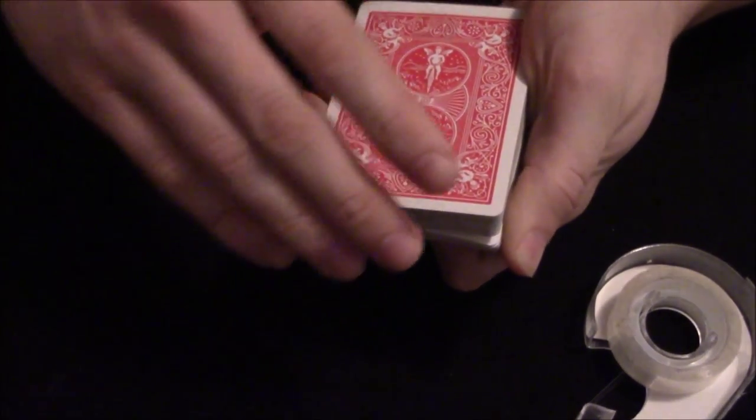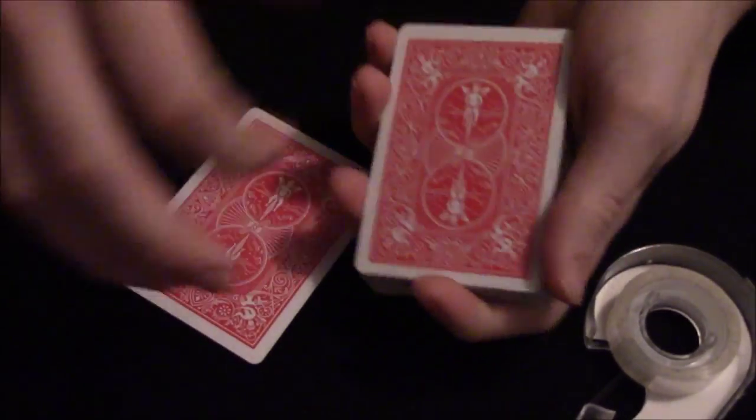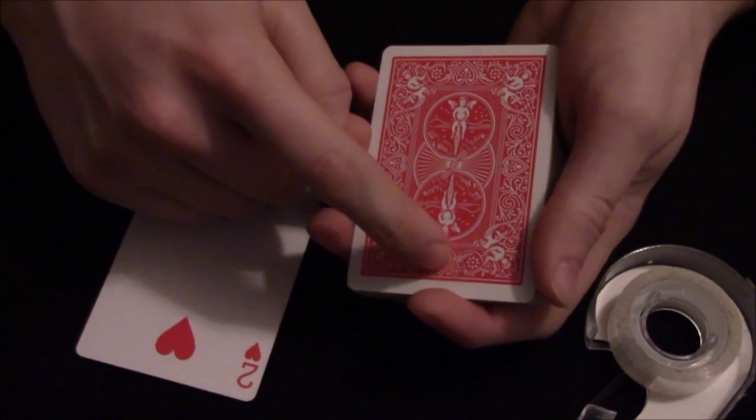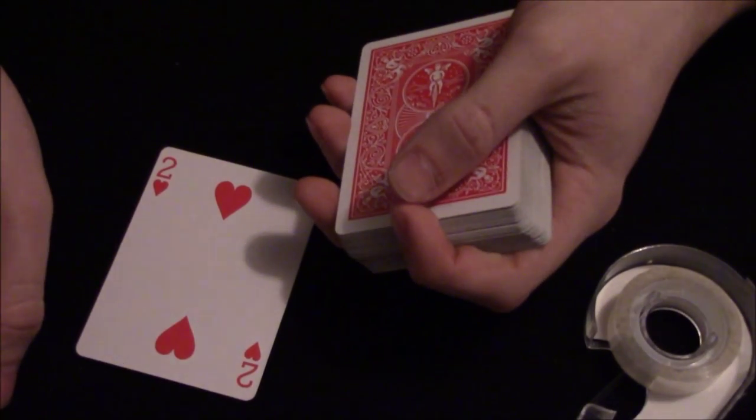And you're going to take that two of hearts, and you're going to hold a pinky break. And with this effect, I use the riffle force because it works best, in my opinion, for this certain trick. So, say you want to stop, and they have the two of hearts. Then you can rotate the deck so that the tape is facing towards them, and just hide it like this.